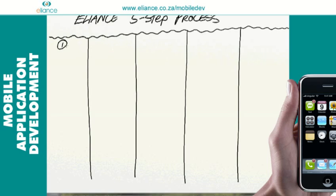Our five steps of development include specification development, which is the process of defining your requirements. Then we have wireframing, which you can think of as a roadmap with all the paths that a user can take in your application — like mapping all the clicks on the application.